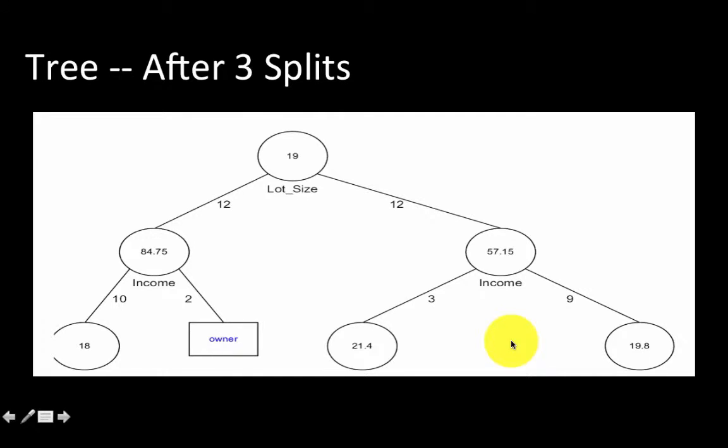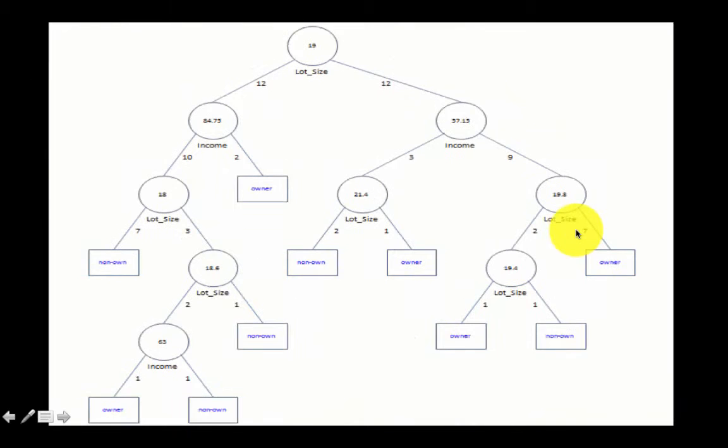After three splits, the tree looks like this. So here this was one split, the second split was at 84.75, and the third split was 57.15 or vice versa. This is a complete tree after all the splits were performed.